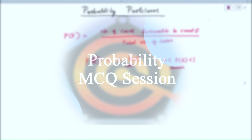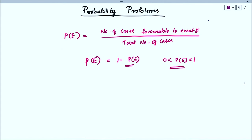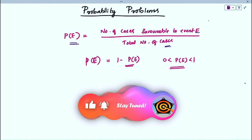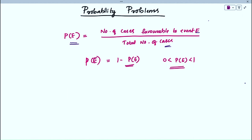Hi all, today we are going to discuss some problems regarding probability. We already discussed what probability is and the ways of finding probabilities. The probability of getting an event is represented by P(E), which is equal to the number of cases favorable to event E divided by the total number of cases. This is the general formula. The probability of not getting the favorable event is denoted P(Ē) = 1 minus P(E). Also, the probability value lies between 0 and 1. These are the main formulas we discussed.